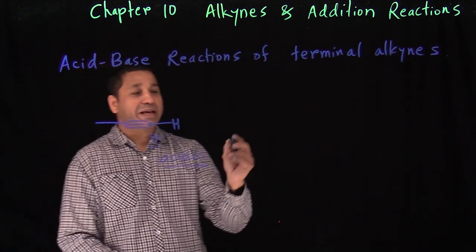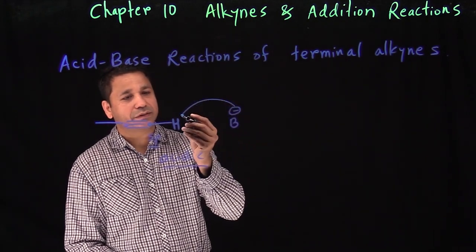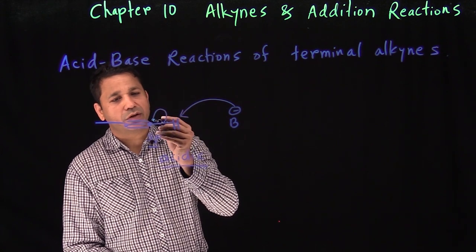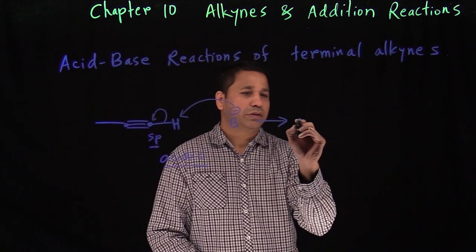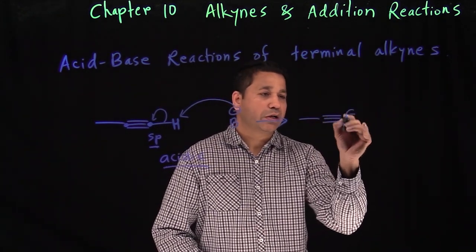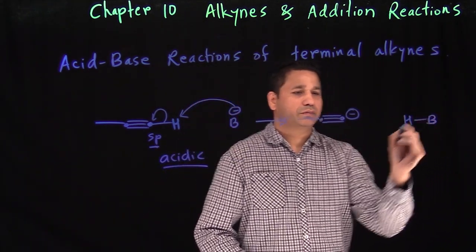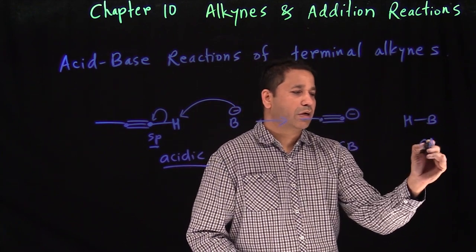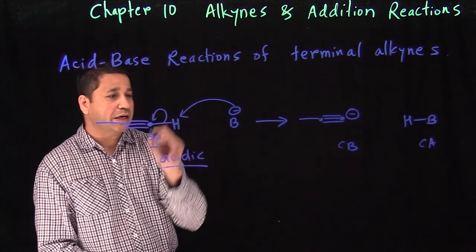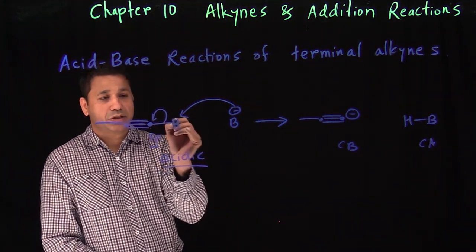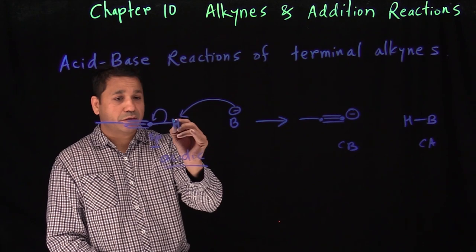That hydrogen is acidic. Why? Because that carbon is an sp-hybridized carbon. When you have an sp carbon, the hydrogen attached to it makes it a strong acid due to the hybridization effect — sp3, sp2, and sp, with sp making it the strongest acid. So if you throw a base, it will easily pick up that hydrogen.